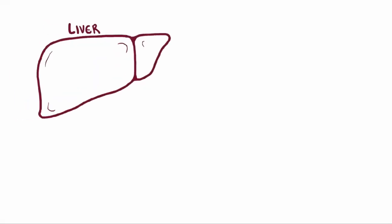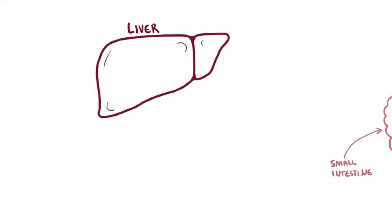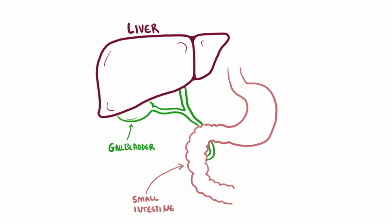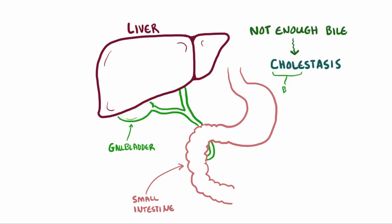For healthy humans, bile usually flows from the liver and into the small intestine, and this is a super important part of digestion and absorption of nutrients. When there isn't enough bile flowing between these two, we can say that there's some sort of cholestasis going on, because 'cola' means bile and 'stasis' means inactivity.